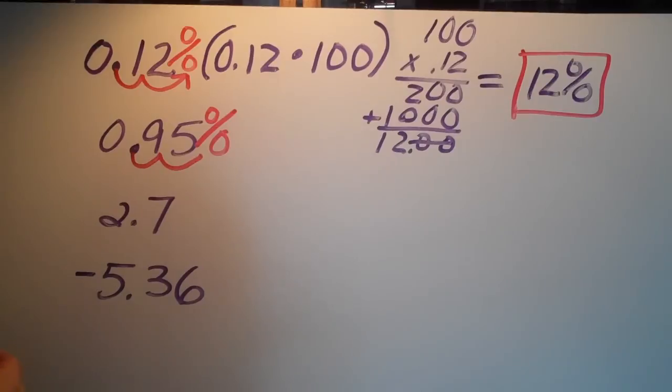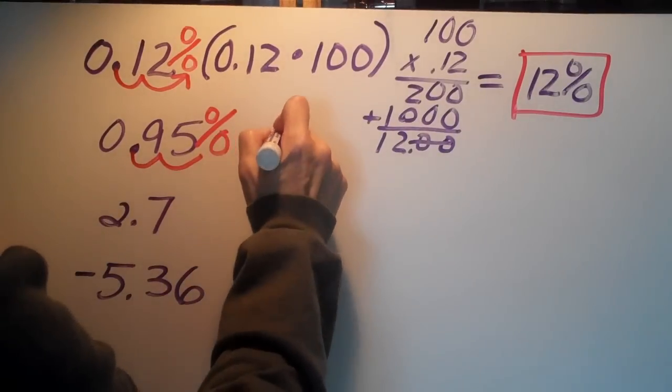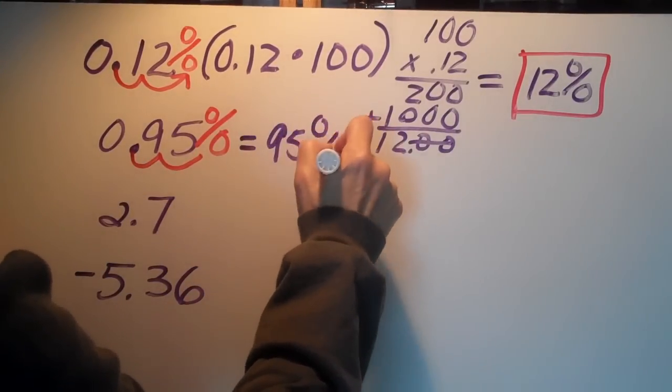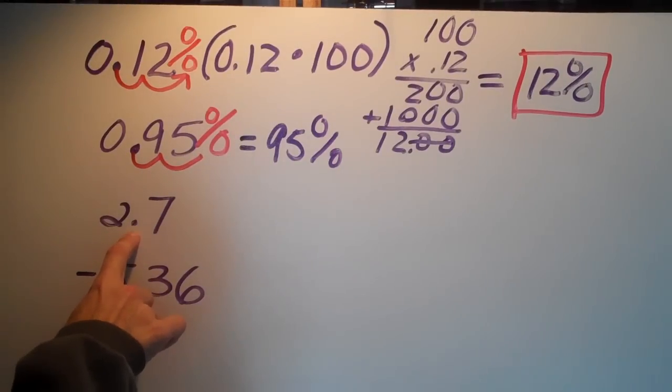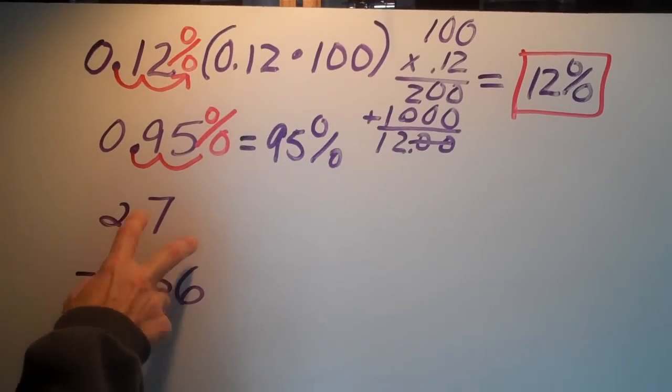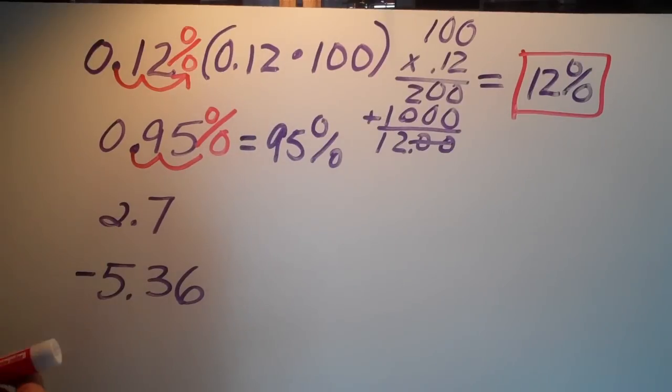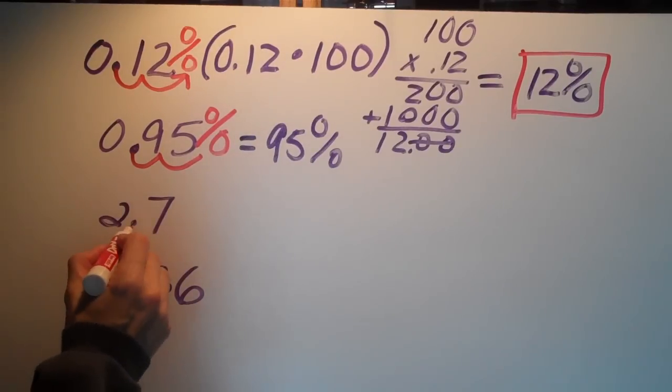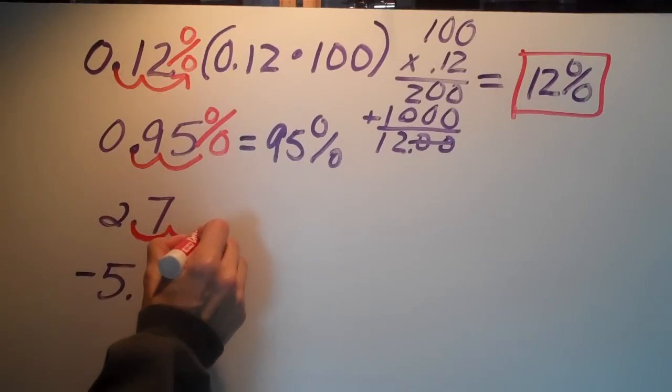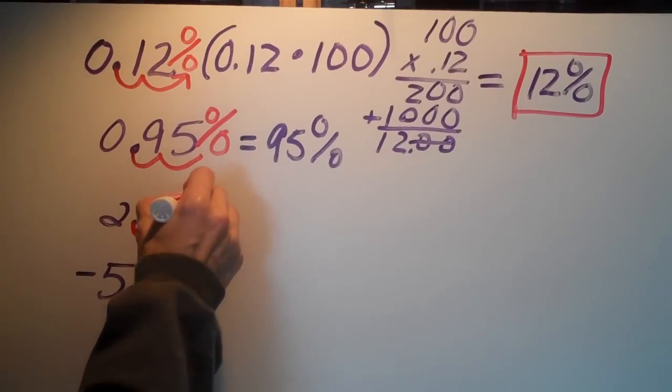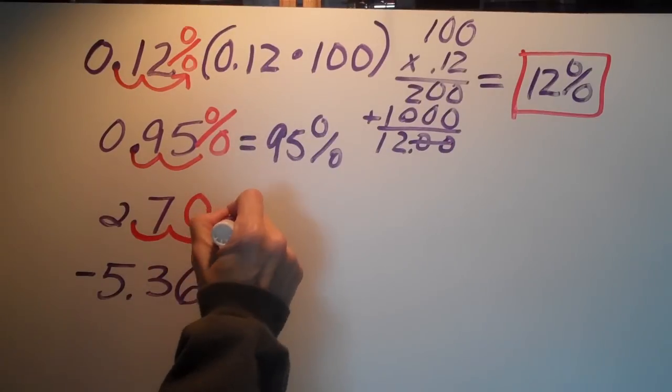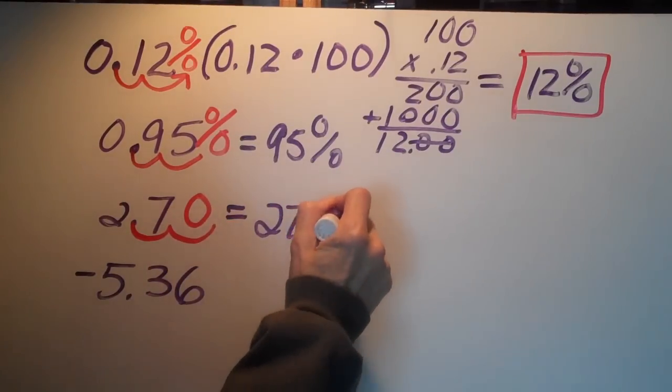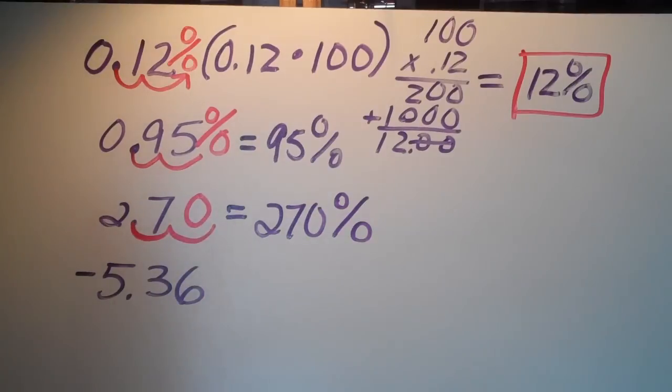Okay, what if there is a decimal in there and we want to change it to a percent? Well, what we're doing now is we're starting from that decimal, moving two places to the right, adding in that zero again as a placeholder, and it becomes 270 percent.